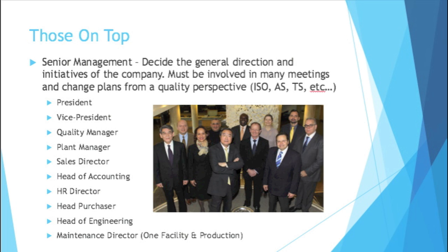Let's start with those on top: senior management. They decide the general direction and initiatives of the company. They must be involved in many meetings and change plans from a quality perspective. If you've heard of ISO, AS, or TS — those are all quality standards — most of those standards specify that any big changes have to have senior management involved. They have to be at the meetings and leading the direction. Some positions in senior management include the president and the vice president.